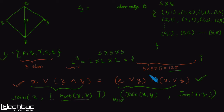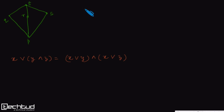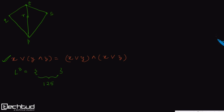To recap: the total number of elements in L³ is 125 and we need to count how many satisfy this property to find the required probability. Let's take a concrete example: let X = T, Y = Q, and Z = R.